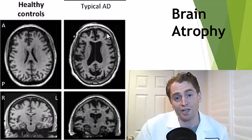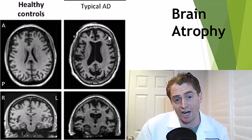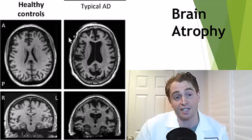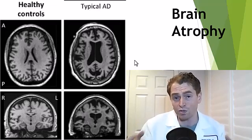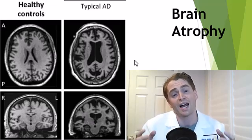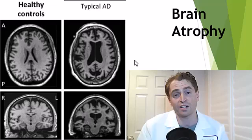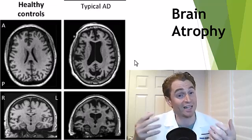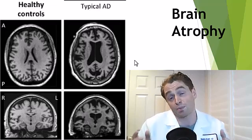Also, the gaps between these gyri, or folds of the brain — the sulci — are larger in the person with Alzheimer's disease than in the person with no neurological disease. It turns out we're all losing brain just with normal aging. The brain shrinks at about 0.2% to 0.4% per year, but in neurological diseases such as multiple sclerosis, it can be accelerated, though it is highly variable from person to person.